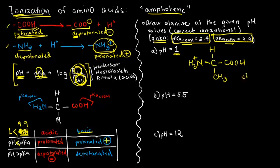This is the structure of alanine at pH 1 with the proper charges. The overall charge is only one positive charge, so the net charge is positive 1.